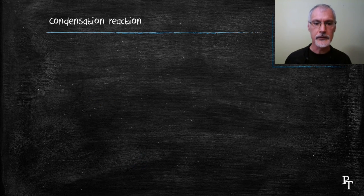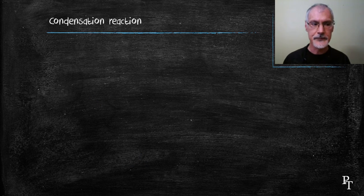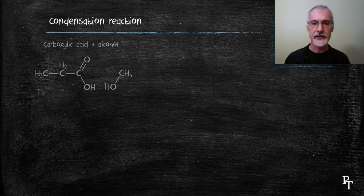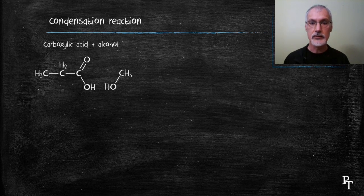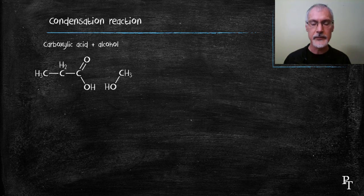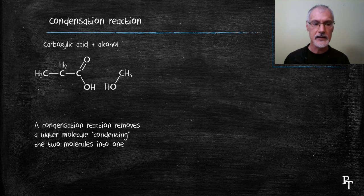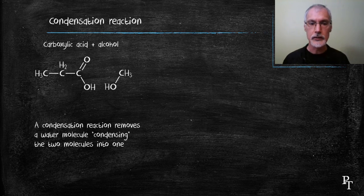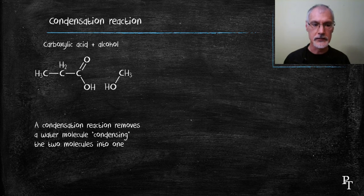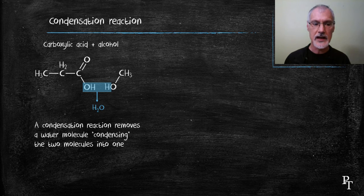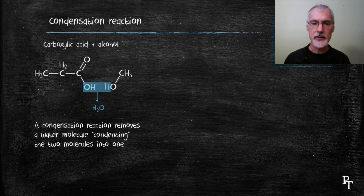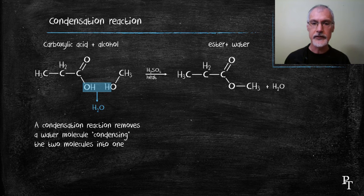Alcohols also undergo a process called a condensation reaction. I can take a carboxylic acid and an alcohol and subject them to condensation to bring them together to condense them into a smaller molecule. To do that, I need to remove a water molecule between the two. And that's shown here in the blue. So by removing the H from the alcohol and the OH from the acid, that oxygen and carbon now need to form a bond. And they do so, and they link together to form what's called an ester.